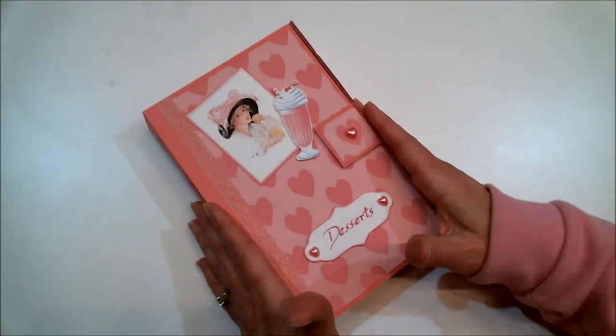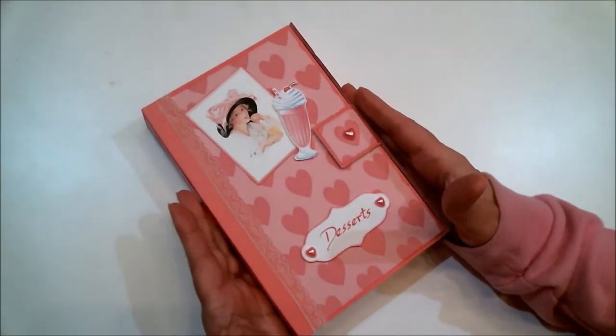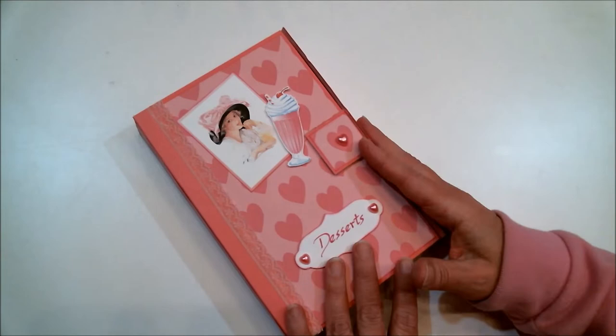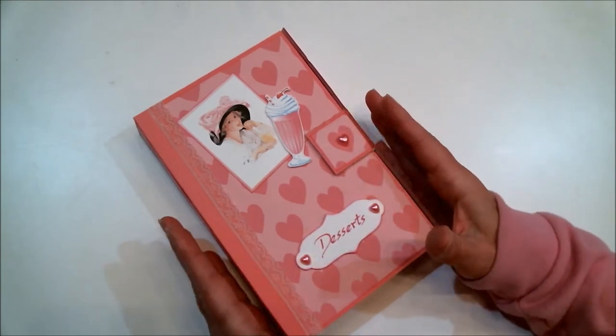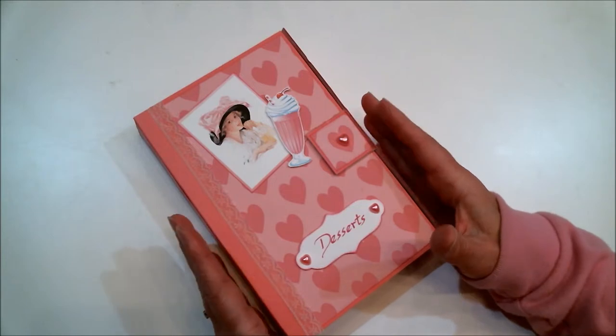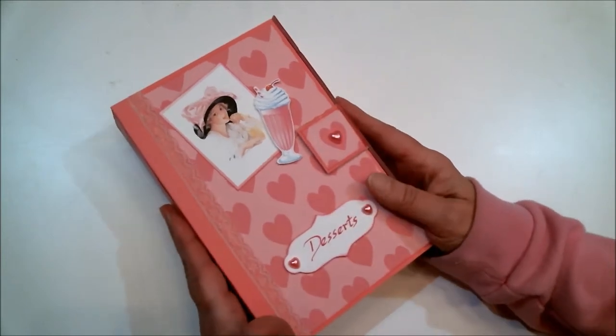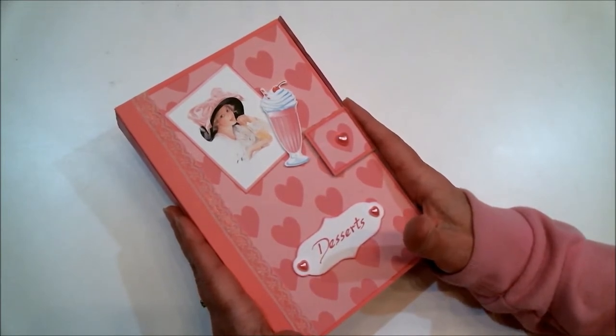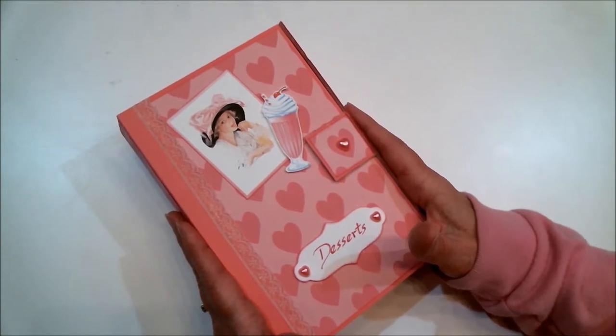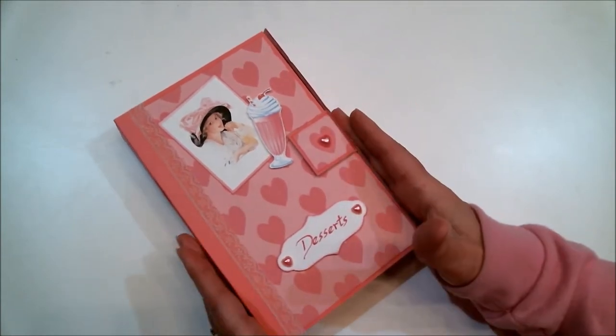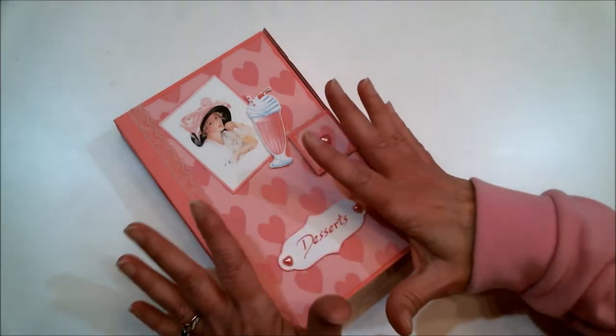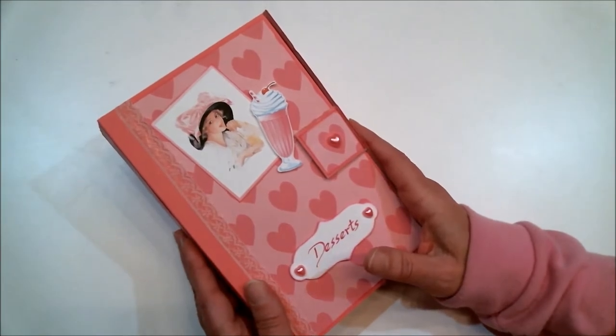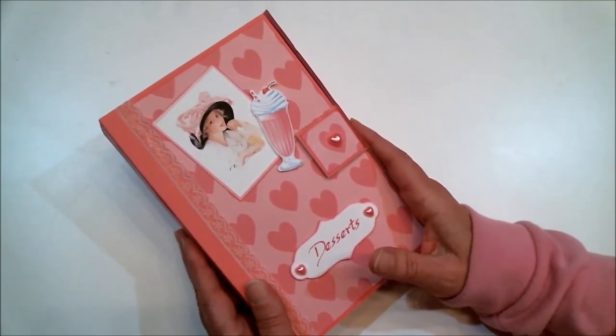So I've decided to share a finished project first. And then if you want more information on how I made this, that will follow. So what this is, is a recipe book slash recipe holder, because it's a place where I can save recipe cards or recipes that I've printed out off the computer or cut out of a magazine. And I'm only putting my favorites in here and only desserts. And all of the papers and cutouts and things that I used all come from the Soda Fountain Shop Bundle from TaylorMade Cards For You.